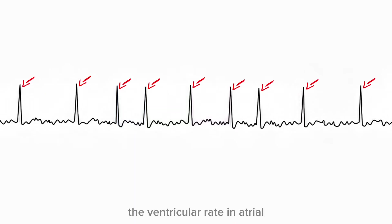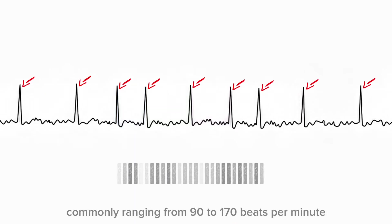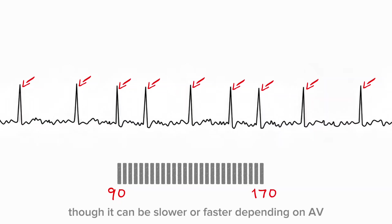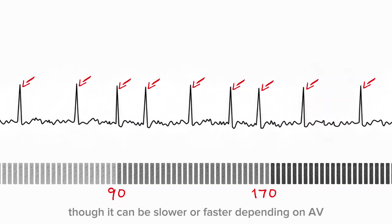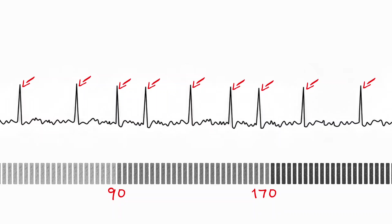The ventricular rate in atrial fibrillation is often rapid, commonly ranging from 90 to 170 beats per minute, though it can be slower or faster depending on AV nodal conduction and medications.